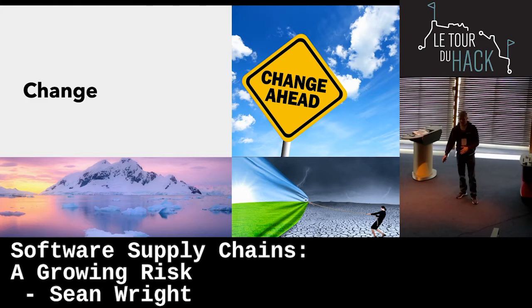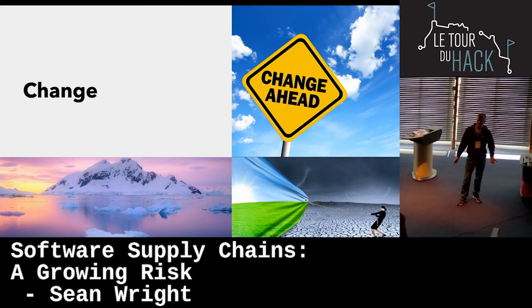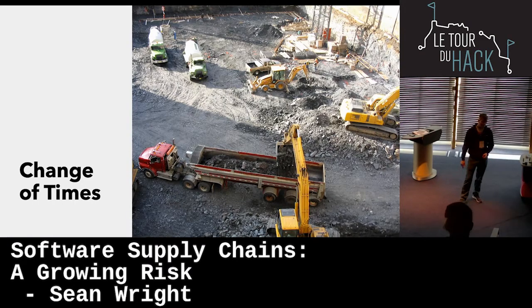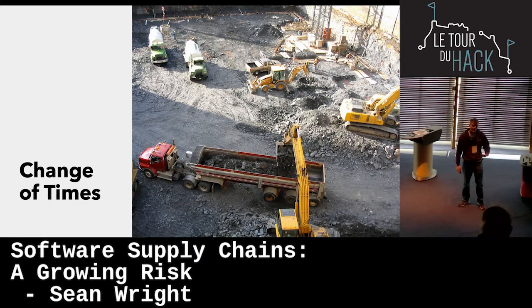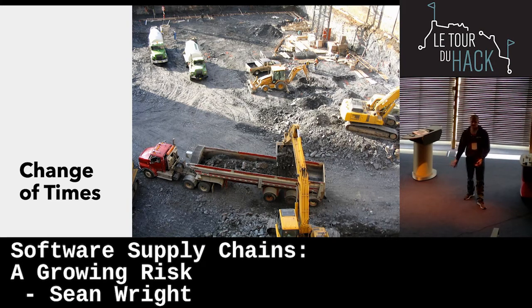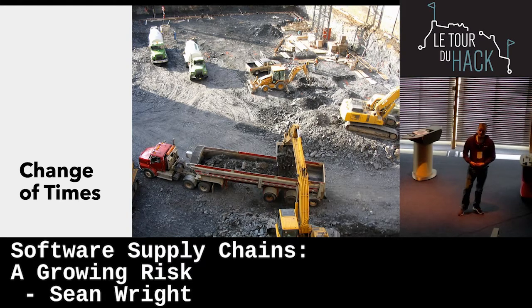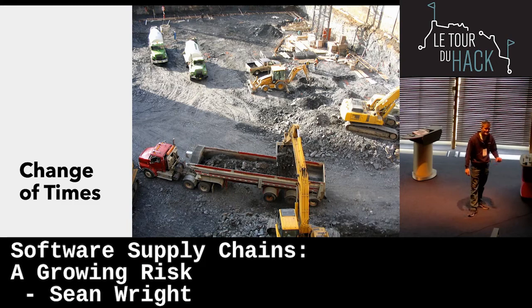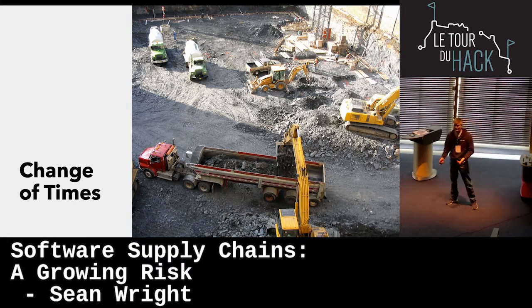One of the important things is we need to take a step back and see how things have changed over the years, especially when it comes to development software and third-party software. When I first started my career, third-party software wasn't really that common — you would develop things from the ground up. Companies would build their own internal libraries. From a security point of view, this is great — you have better control and visibility. From a usability point of view, it's not so great. You could reinvent the wheel, and there's a lot of maintenance around those packages.